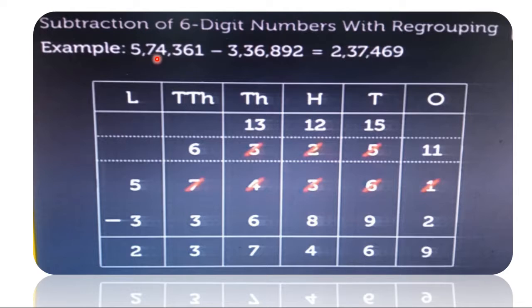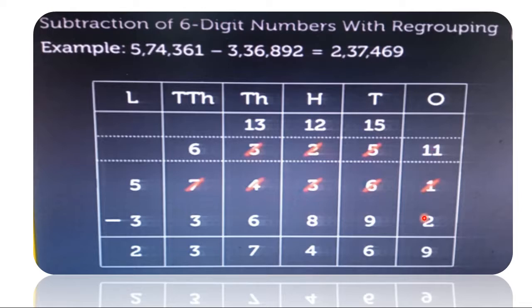5,074,361 minus 3,36,892. We start from the units place. Here we have 1. We couldn't subtract 2 from 1, so we will borrow from the tens place. So 1 becomes 11. 11 minus 2, we got difference 9.